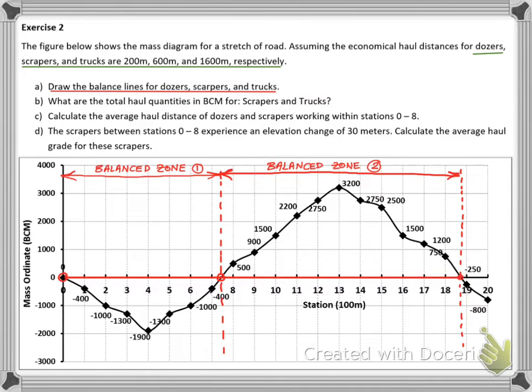In part A we need to draw the balance lines of the sub zones of these equipment. I can draw the 200 meter economical haul distance of the dozers as shown and I will allocate this balance zone sub zone to dozers one.